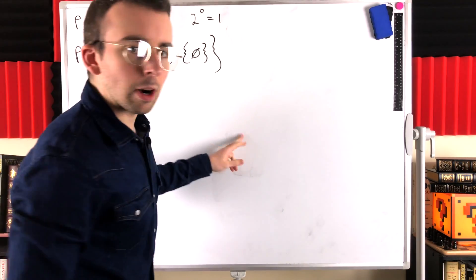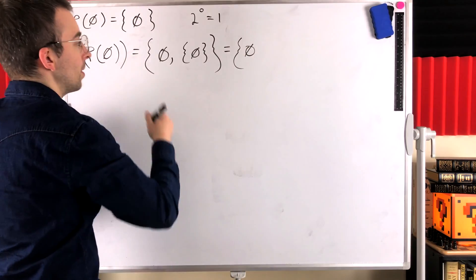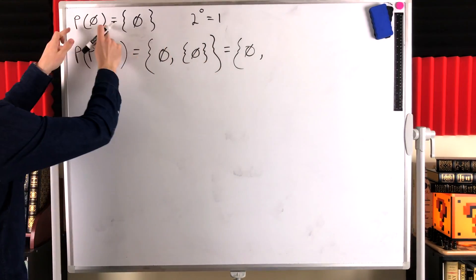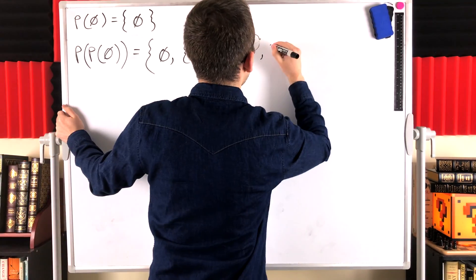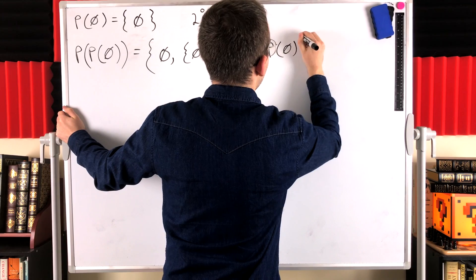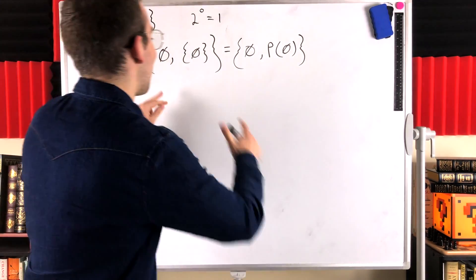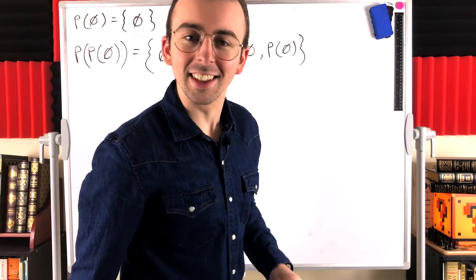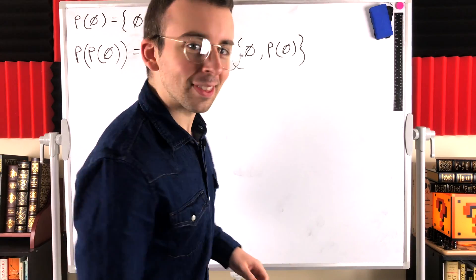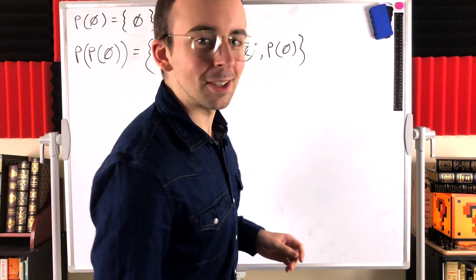Another way to write this: the first element is the empty set, and the second element is the power set of the empty set — so you could just write 'power set of the empty set' for that second element. Half the fun of these problems is that you get all these nasty set brackets and it just looks ridiculous — but writing it out with the power set notation would probably be preferable in many places.